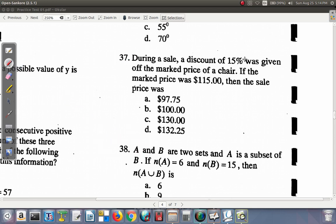During a sale, a discount of 15% was given off the marked price of a chair. If the marked price was $115, then the sale price was... The marked price was $115 and you took 15% off. First of all, if you took 15% off, then the new price cannot be higher than $115. So you can get rid of $132 and $130. Since you took off, it's not supposed to be higher than $115. C and D are ridiculous - they're higher. It's either A or B.